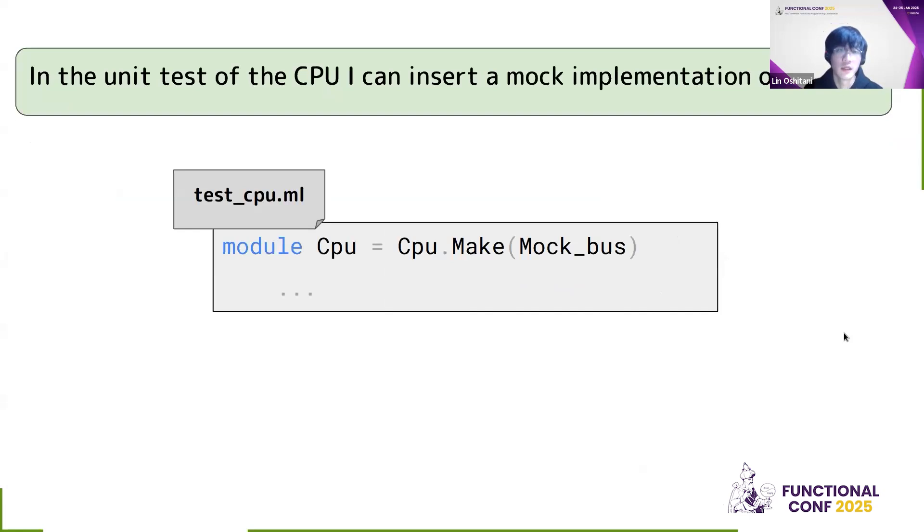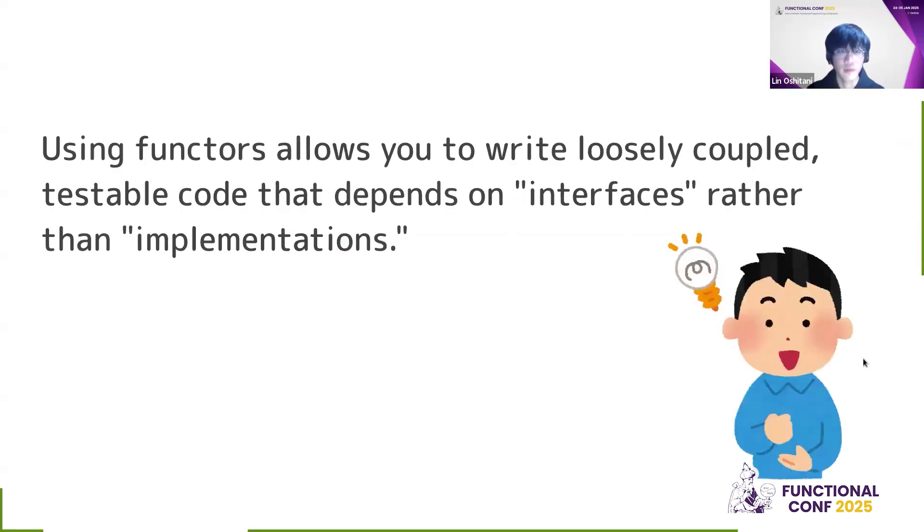Now by having this, by making the CPU a functor, in the unit tests of the CPU, I can insert a mock implementation of the bus. So in the test cpu.ml, when I instantiate the CPU, I can call the functor and then pass in the mock bus implementation and then go on and test the CPU without worrying about the implementation of the bus or the IO devices. The learning is that by using functors, it allows you to write loosely coupled testable code that depends on interfaces rather than implementation.